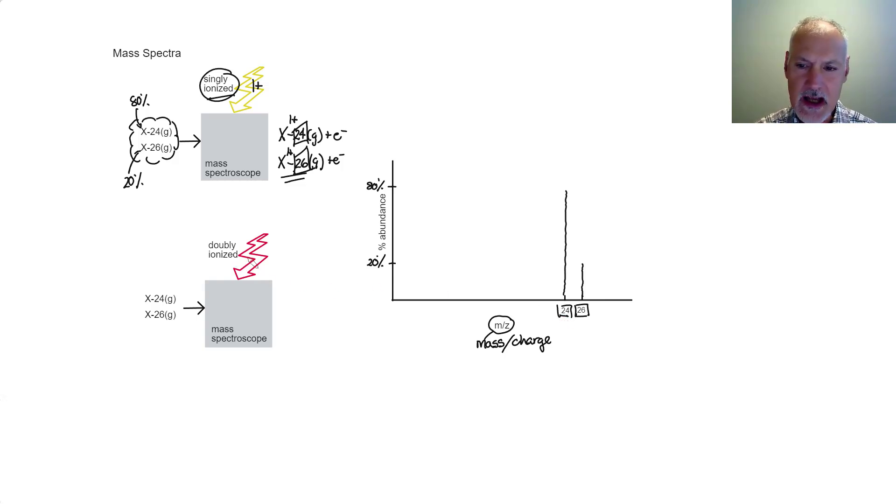What would happen if I used a higher energy form of X-rays, where it was doubly ionized? Well, then the products that would come out would now have a two plus charge. And they would still have the mass of 24, but liberate two electrons. Similarly, the other isotope would also develop a two plus charge. It would still have a mass of 26, and liberate two electrons.